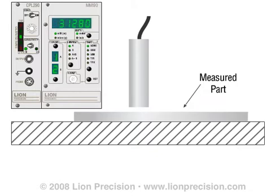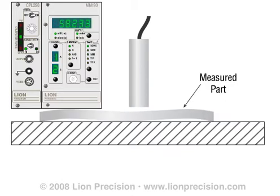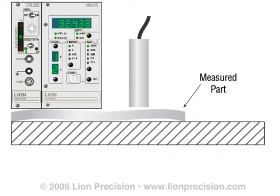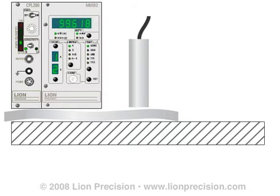The single-channel method assumes the part is perfectly flat against the reference surface. Any deformity of the part or the reference surface will cause portions of the top surface of the part to be higher, which will be incorrectly interpreted as greater thickness. Any foreign matter between the part and the reference surface will also create an error.